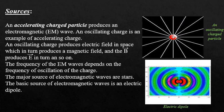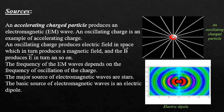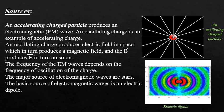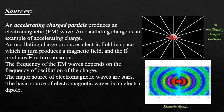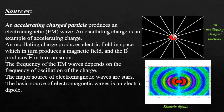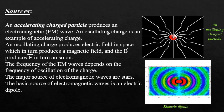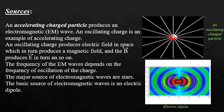The frequency of the electromagnetic wave depends on the frequency of oscillation of the charge. Stars are a major source of electromagnetic waves, and the most basic source of electromagnetic waves is an electric dipole or an electric monopole.